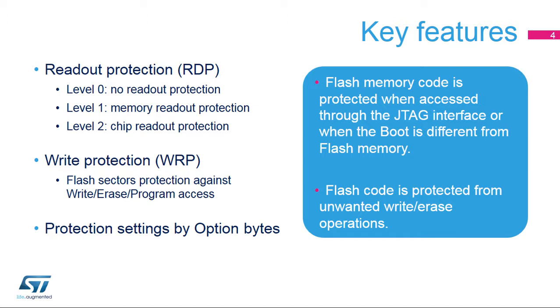Three levels of RDP protection are defined, from Level 0, which offers no protection at all, to Level 2, which has full and permanent protection. Protection levels will be described in the following slides.